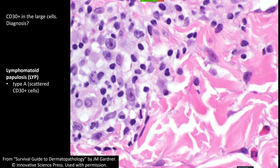This would be lymphomatoid papulosis Type A — when you have scattered CD30-positive cells. The problem is that on biopsy, anytime I get a dense lymphoid infiltrate and do a CD30 stain, I'm going to find some scattered larger CD30-positive cells. Immunoblasts — the fancy word for reactive lymphocytes, reactive B or T cells — tend to stay CD30-positive as activated cells. So many inflammatory reactive processes have scattered large cells that are CD30-positive.